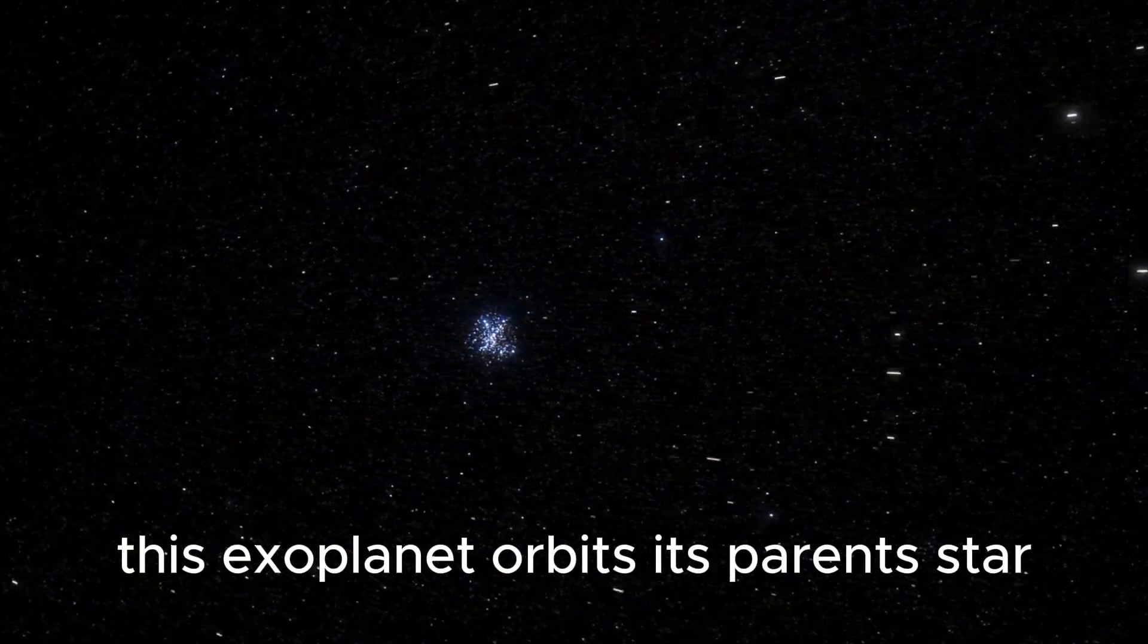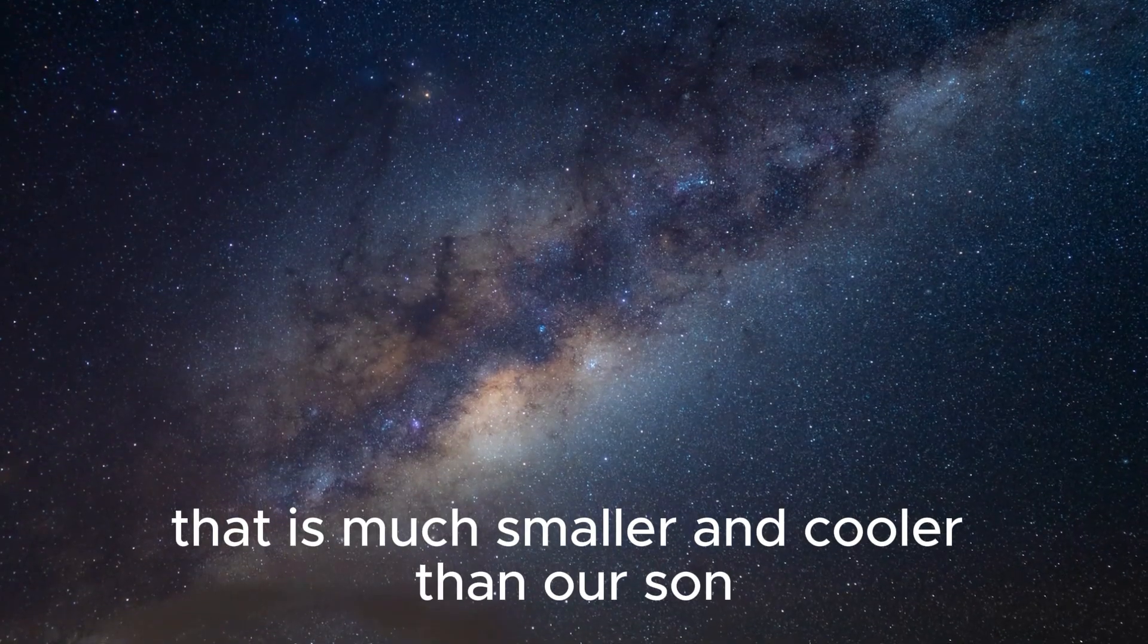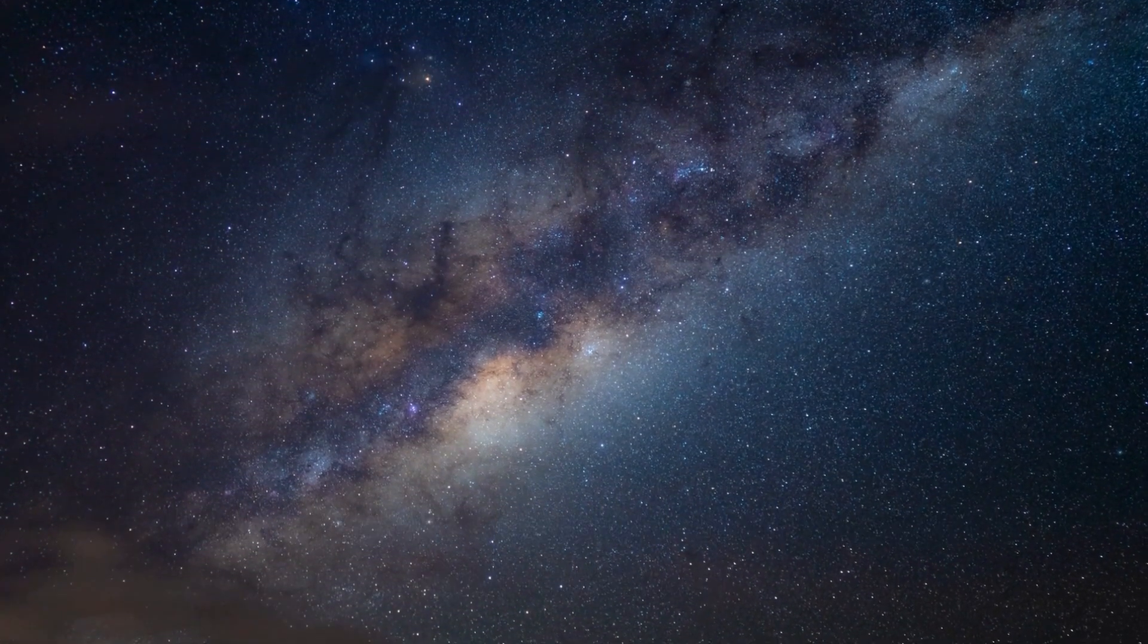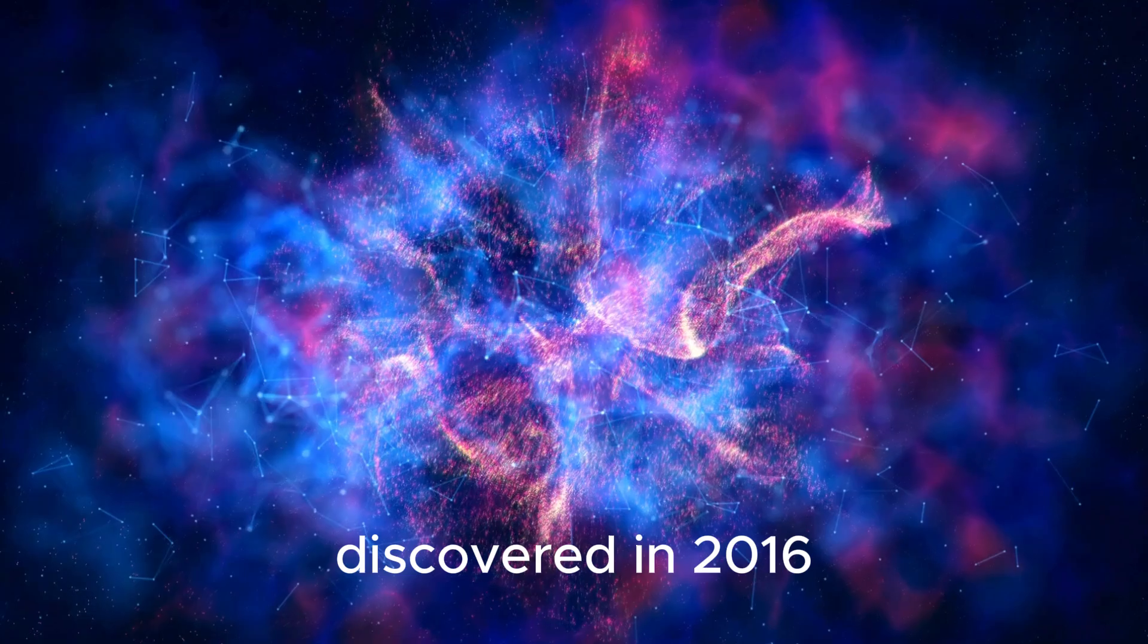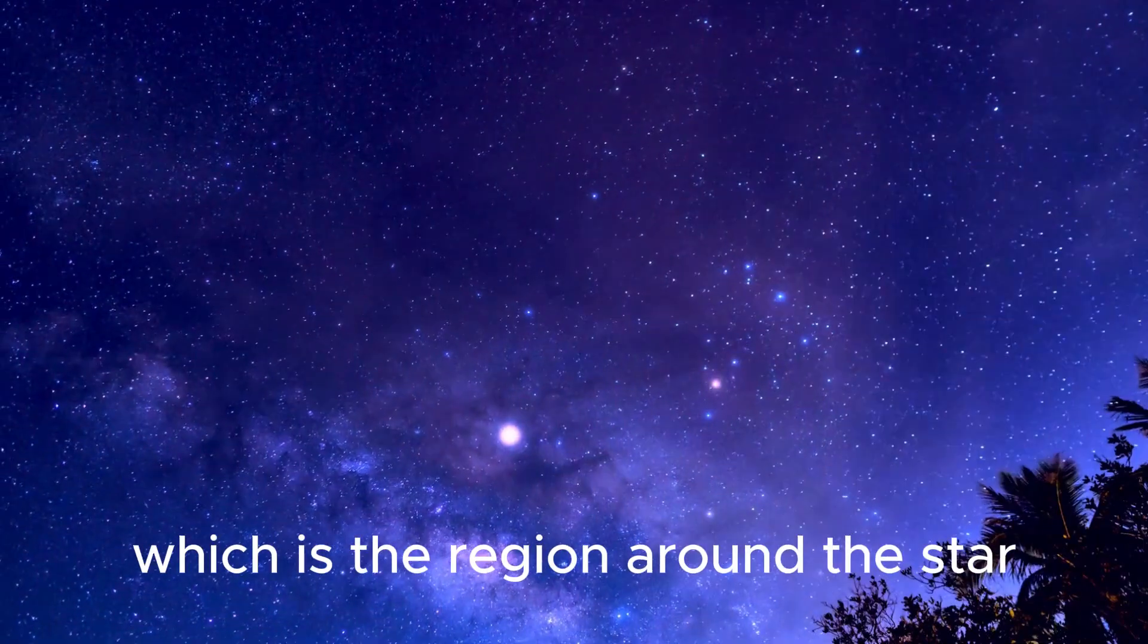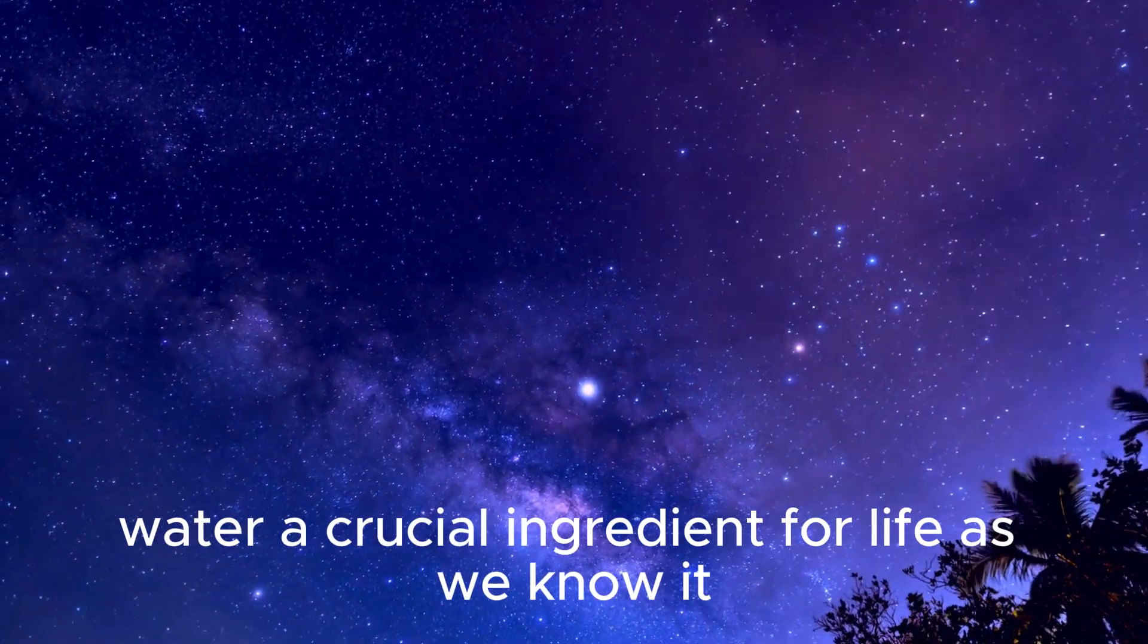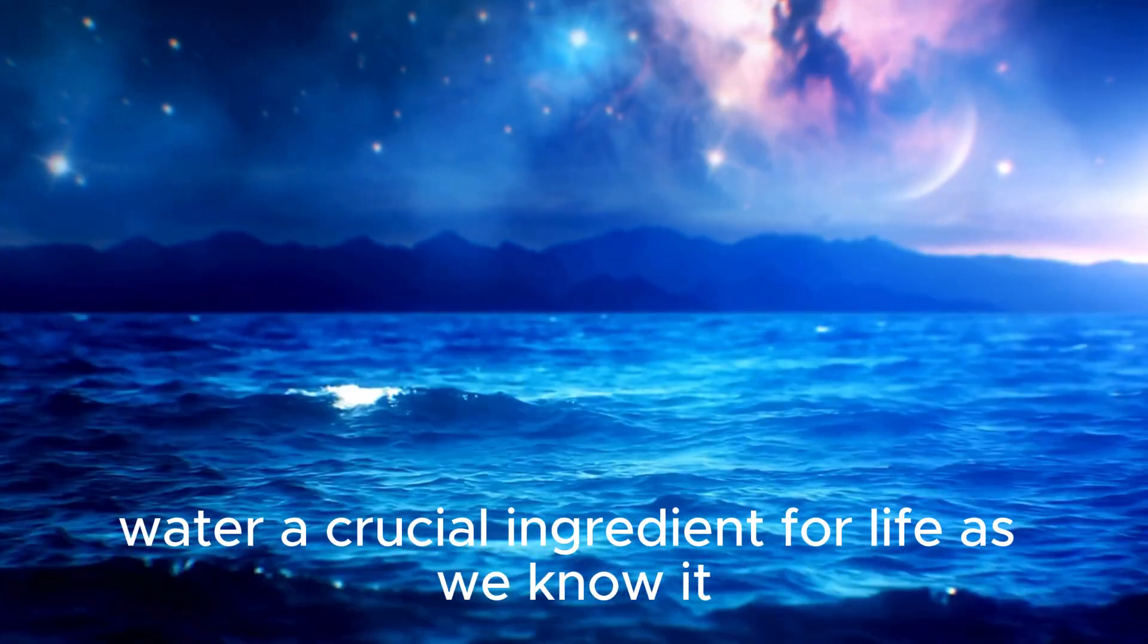This exoplanet orbits its parent star, Proxima Centauri, a red dwarf that is much smaller and cooler than our sun. Discovered in 2016, Proxima b lies in the star's habitable zone, also known as the Goldilocks zone, which is the region around the star where conditions could allow the presence of liquid water, a crucial ingredient for life as we know it.